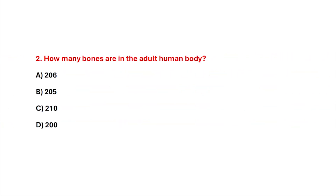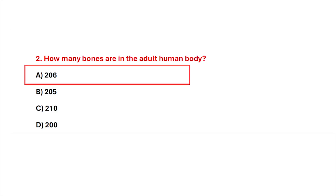Q2. How many bones are in the adult human body? Correct answer is option A, 206.